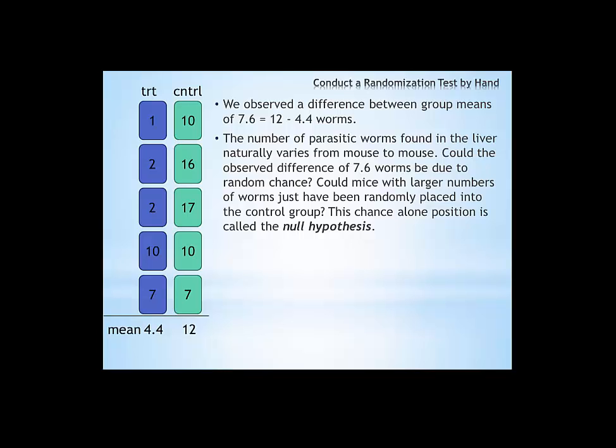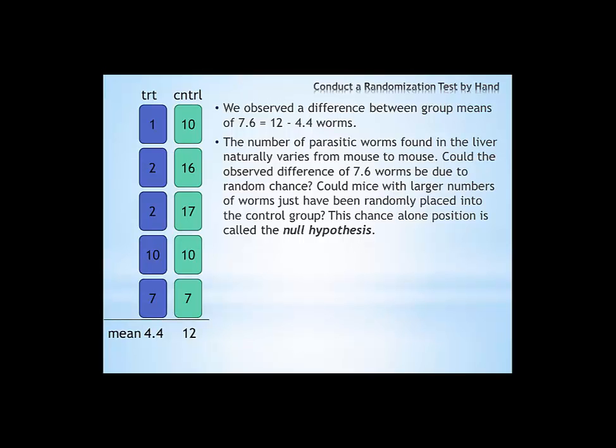In this example we observed that the difference between these group means is 7.6. The number of parasitic worms found in the liver naturally varies from mouse to mouse. So it could just be possible that this difference of 7.6 is due to random chance. Could just by chance a larger number of worms randomly been placed into the control group? This position that claims that it only occurred by chance is called the null hypothesis.